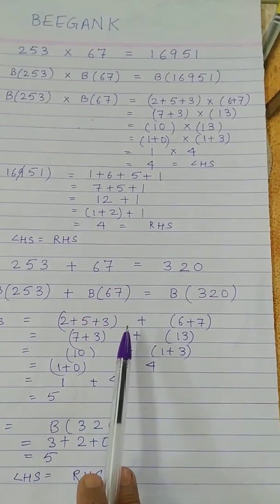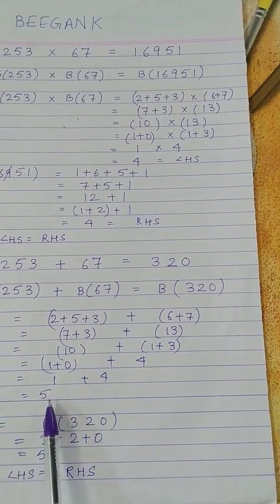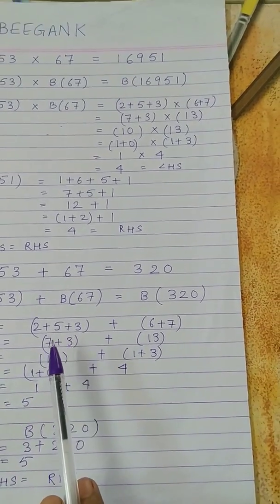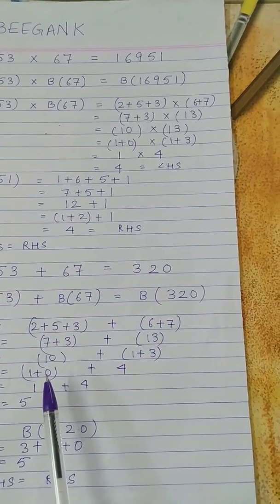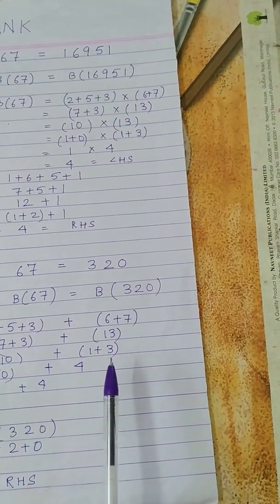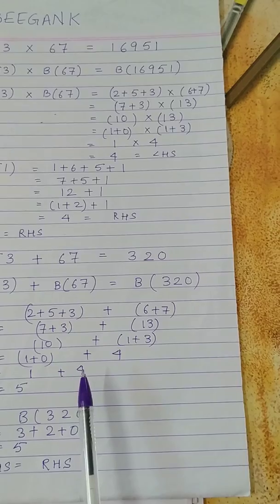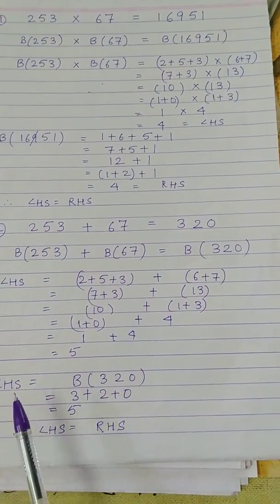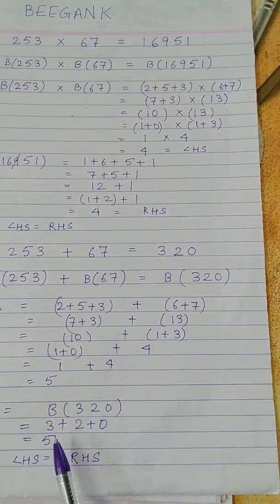So here digital root is 5. How do we get that? 7 plus 3, 10. So we reduce it to single digit, 1. Here 13, so 1 plus 3, 4. Operation plus, so 1 plus 4, that is 5. Right side, it's 320, so 3 plus 2 plus 0, that is 5.